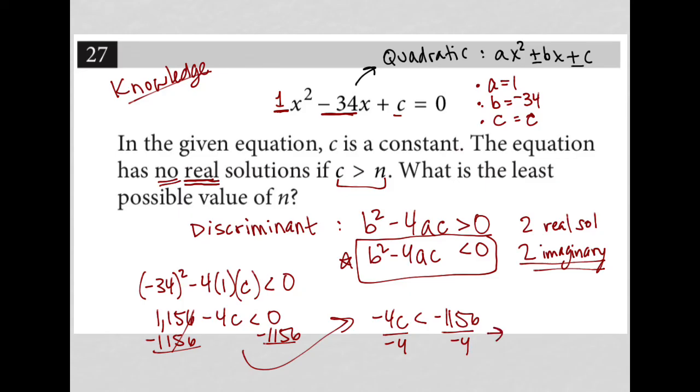And I am left with, since I'm dividing both sides by a negative number, my inequality symbol will switch direction. So this turns into c is greater than 289.